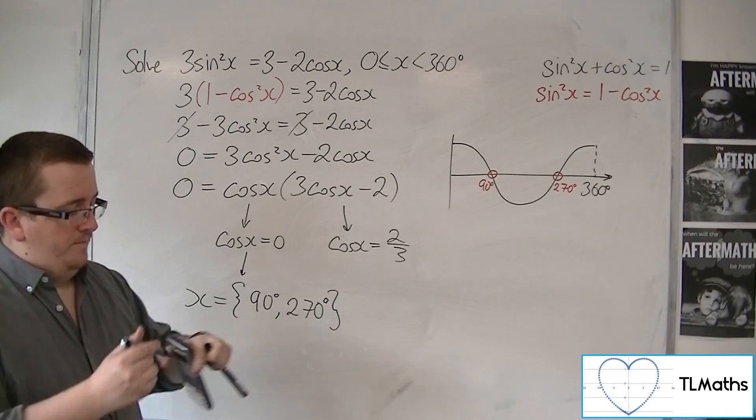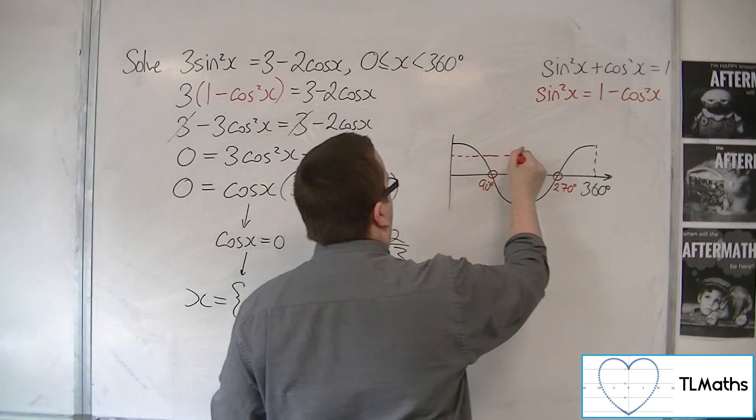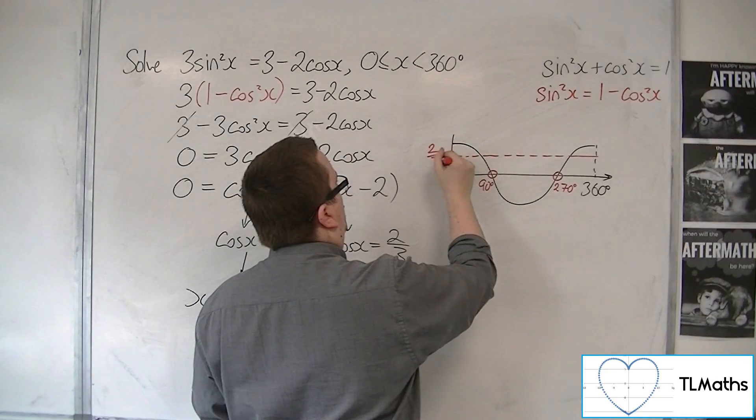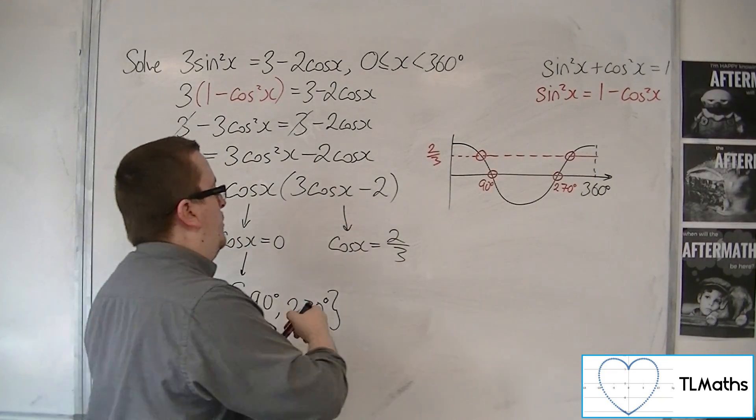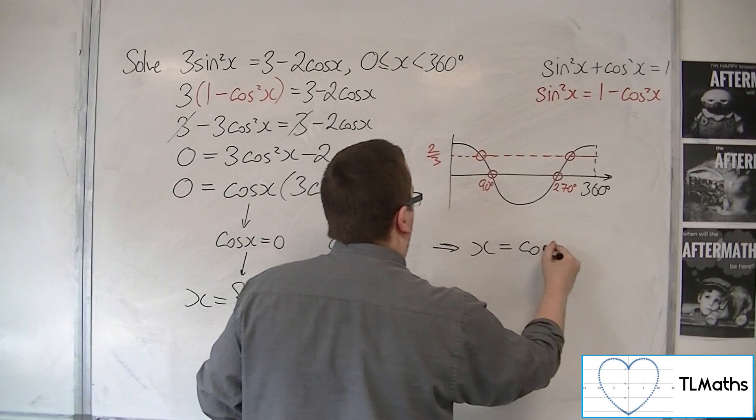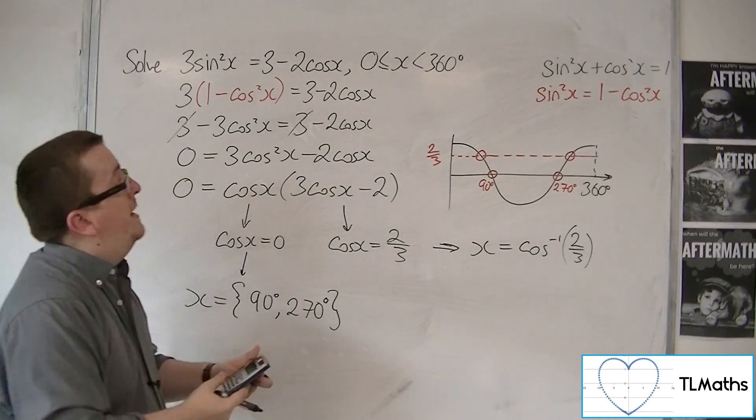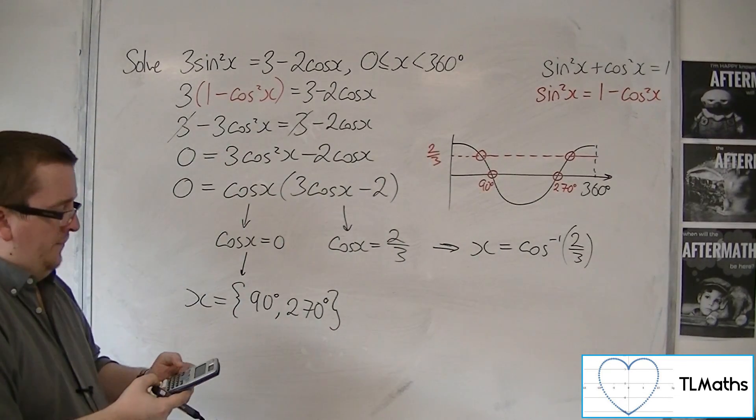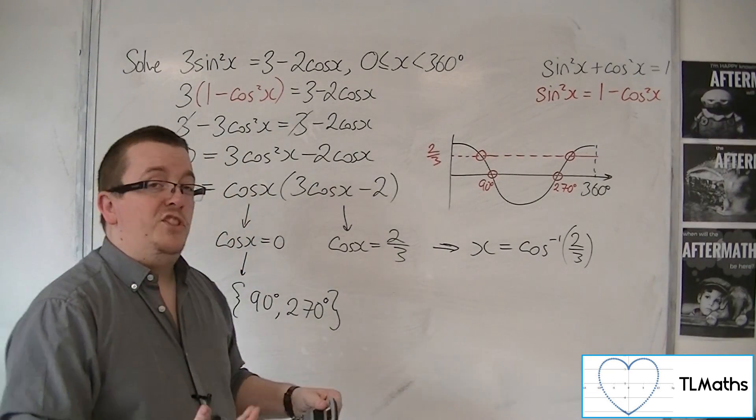From this equation, if I draw in the horizontal line of 2 thirds, I have a solution there and a solution there. So if I inverse cosine of 2 thirds, making sure my calculator is in degrees, inverse cos of 2 thirds is 48.2 degrees.